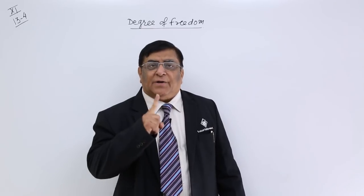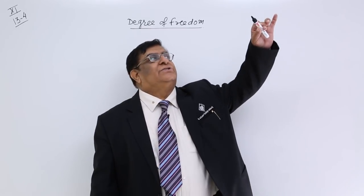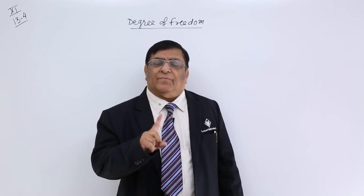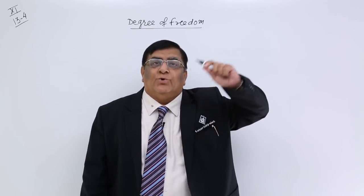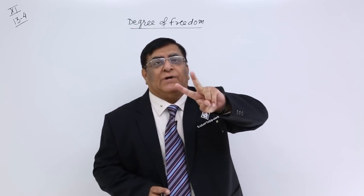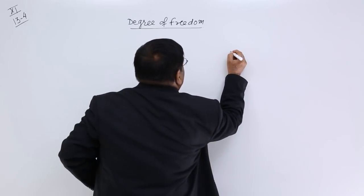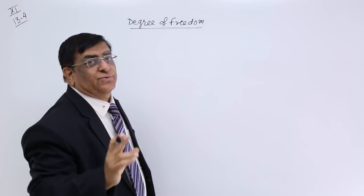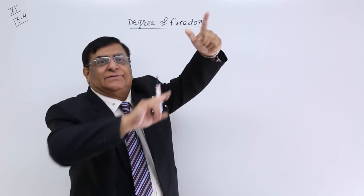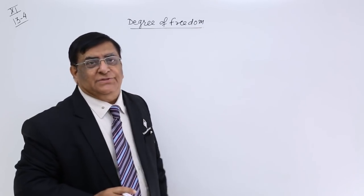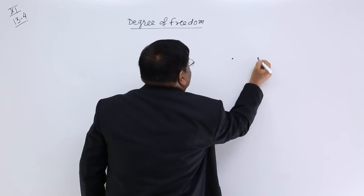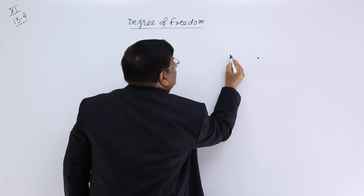The number of coordinates required to tell its position and orientation is the same as the number of motions it can make, and both denote the degree of freedom. Now, suppose I have two atoms in one molecule. For one atom, I tell you its position with x coordinate, y coordinate, z coordinate. But if there are two atoms, these two atoms make one molecule.